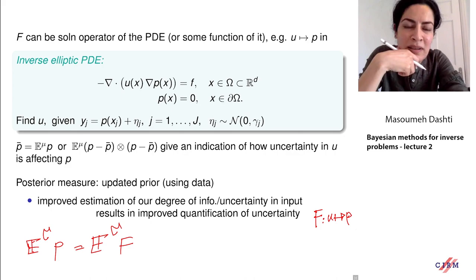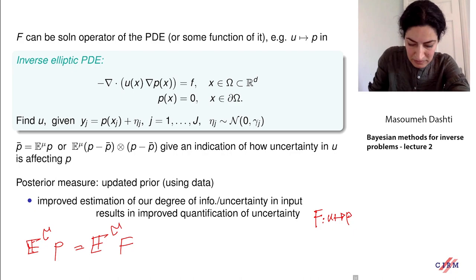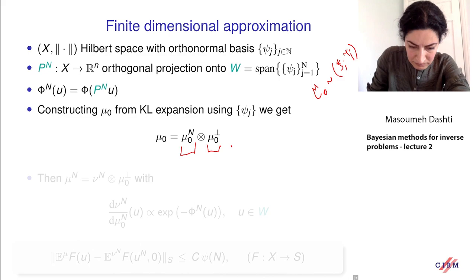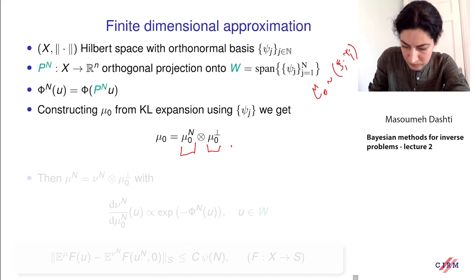There are a few questions in the chat. Utah Seidler had a question concerning the connection of the Bayesian approach and classical regularization: in what sense is the solution regularized, and can we control the regularity of the quantity of interest by the choice of the prior?